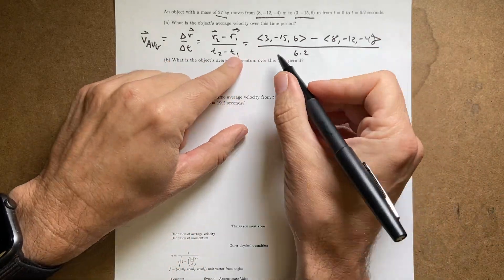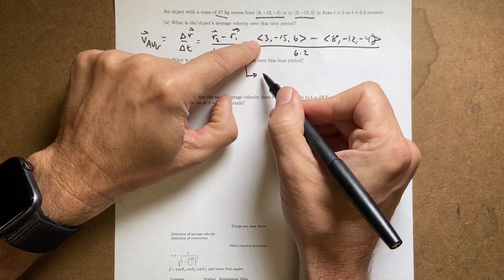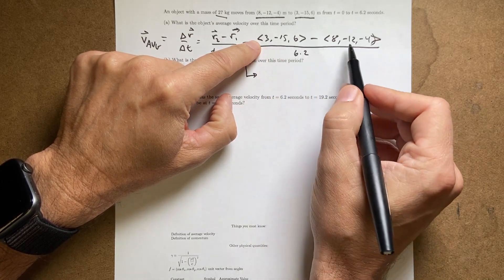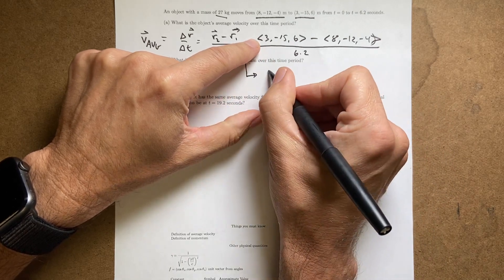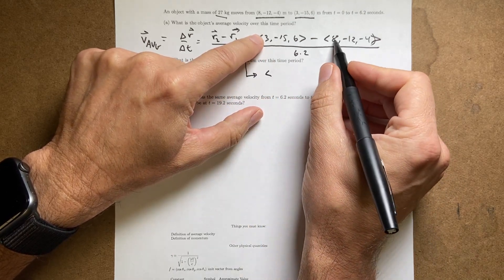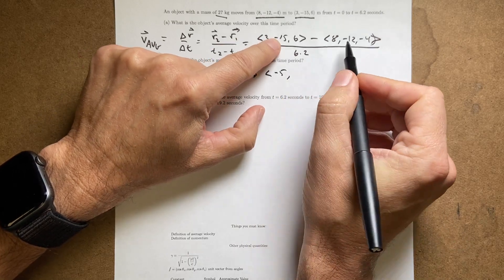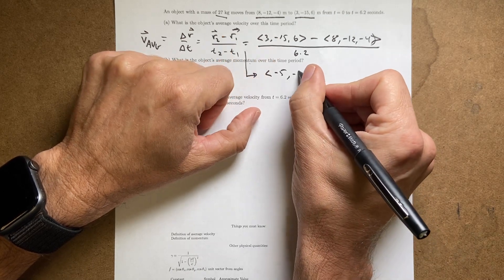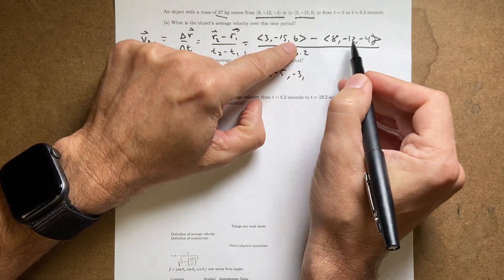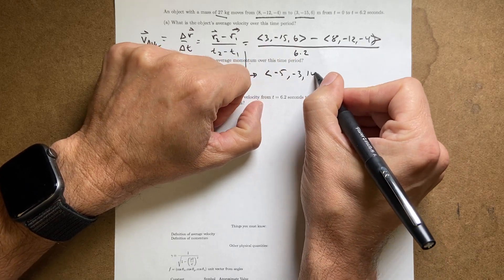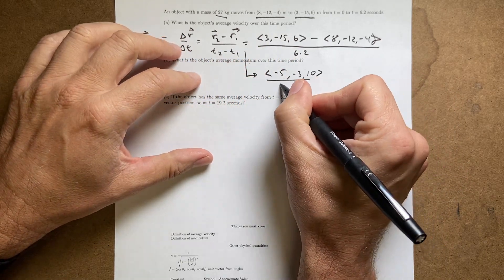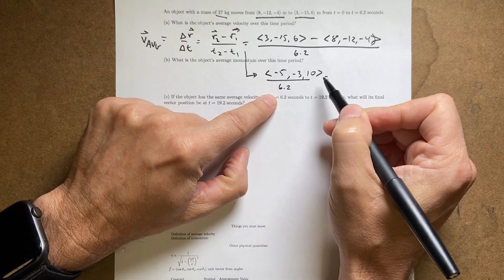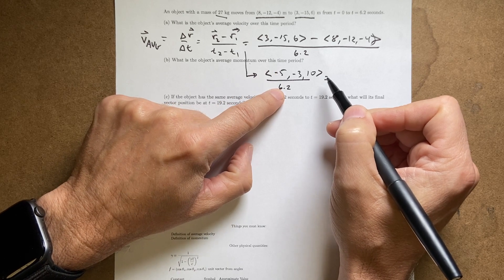Okay, so now how do I calculate this? I'm going to move it down here. So to do this, I have two vectors. I'm subtracting vectors. I can just subtract the components. So the vector component is going to be 3 minus 8, that's negative 5. Negative 15 minus negative 12 is plus 12, so it's negative 3. 6 minus negative 4 is going to be 10. All that over 6.2.